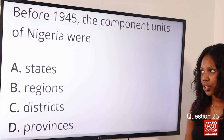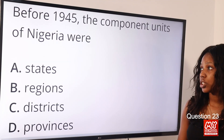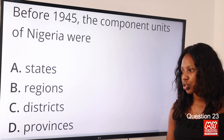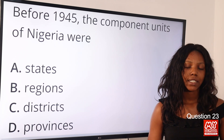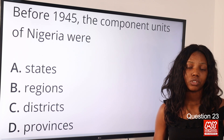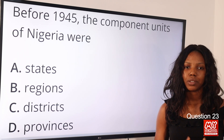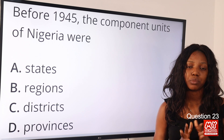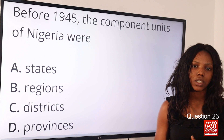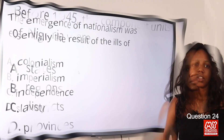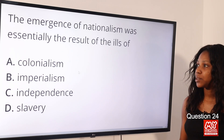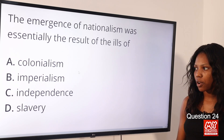Question 23: Before 1945, the component units of Nigeria were — option A: states; option B: regions; option C: districts; option D: provinces. The answer is option D, provinces. During colonial rule before 1945, Nigeria was divided into provinces — the Northern Provinces and the Southern Provinces.